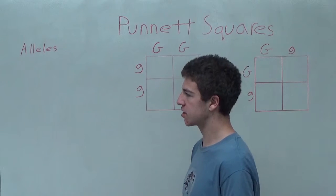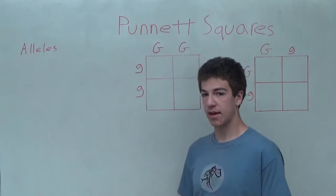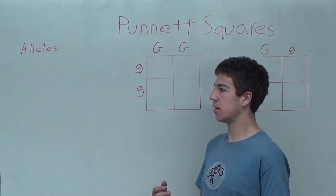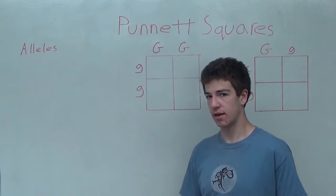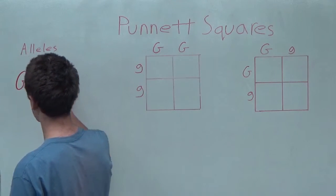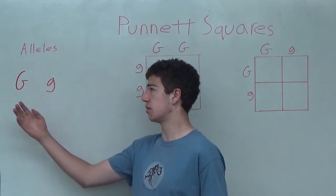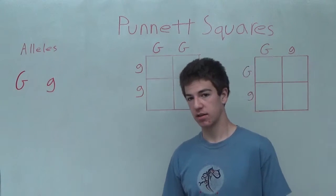And so Mendel discovered that there are these things called alleles within the DNA of pea plants. They are represented by two different letters, a capital letter and a lowercase letter. The capital letter represents the dominant allele, and the lowercase letter represents a recessive allele.